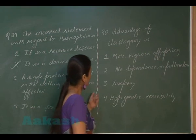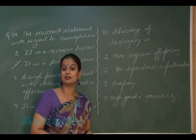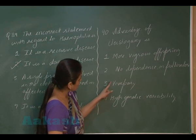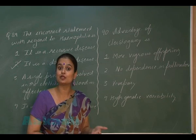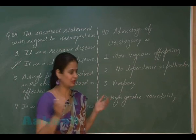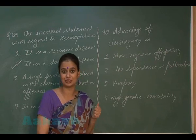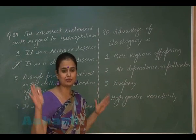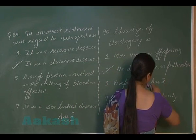Cleistogamy is comparatively cheaper than cross-pollination as fewer resources are required. Looking at the options: more vigorous offspring — not applicable since self-pollination reduces variation; viviparous germination — unrelated; high genetic variability — not applicable since cross-pollination is absent. The correct option is option 2: no dependence on pollinator. Without a pollinator, pollination still occurs. So the answer for question 90 is option 2.